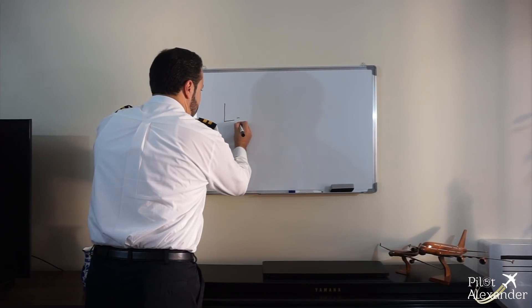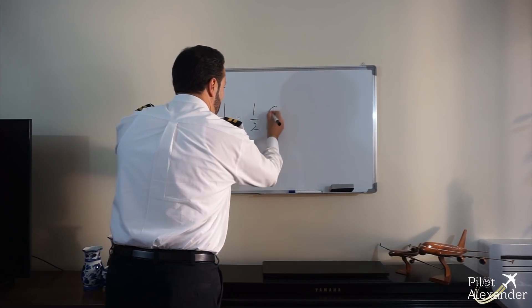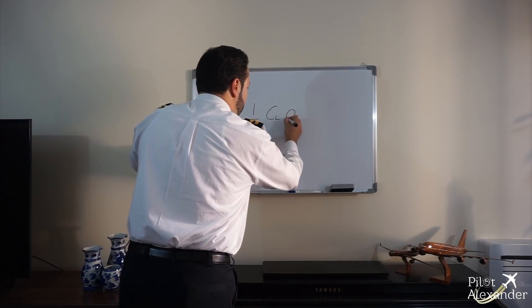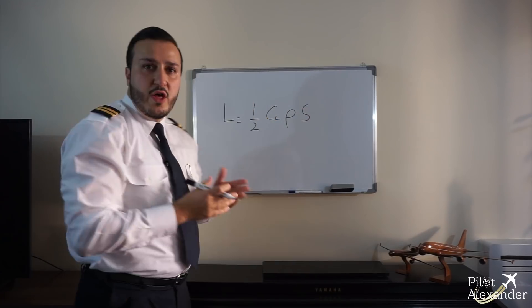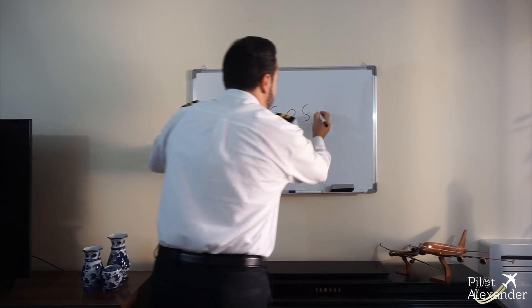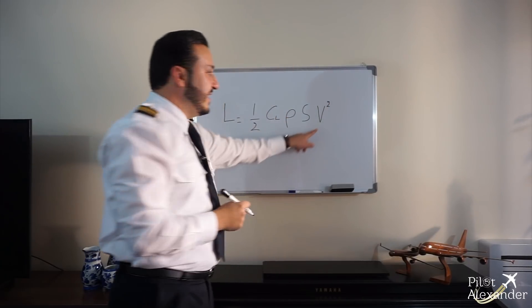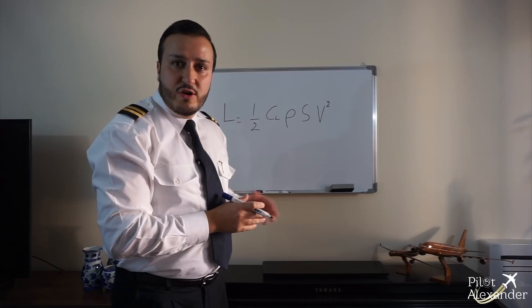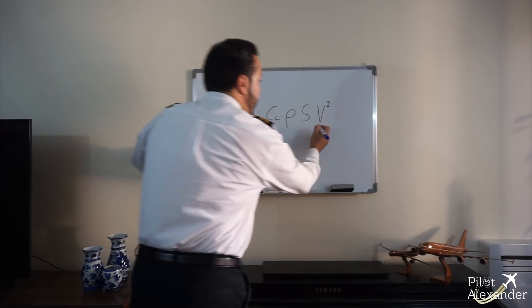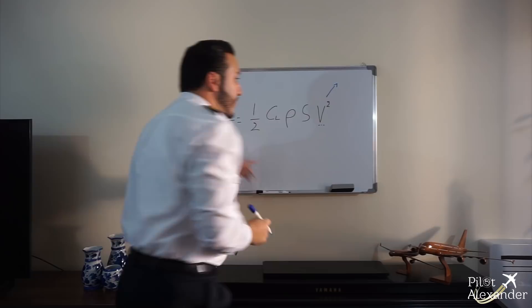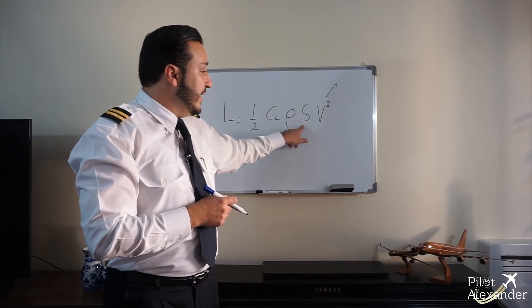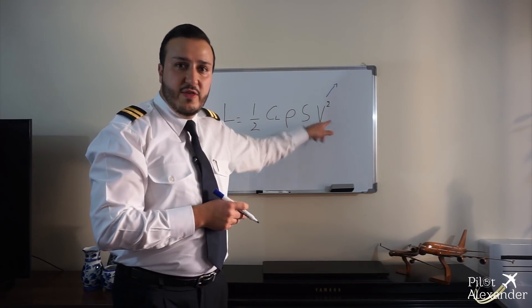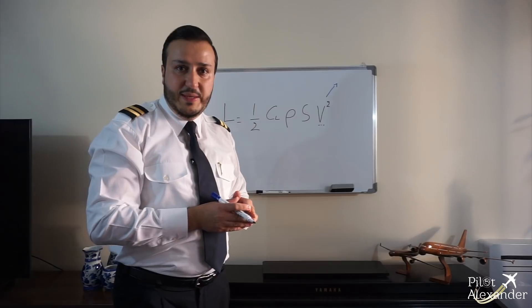Let's take a closer look at the lift equation. Lift equals one-half of the lift coefficient times rho — which is the air density — times S, the surface or wing area, times velocity squared, which is the airspeed squared. When we increase the speed, lift increases as well, and when we increase the wing area, we also increase lift. By reaching the necessary speed, we can generate sufficient lift.